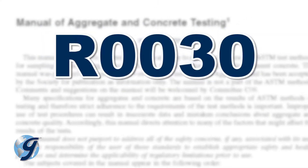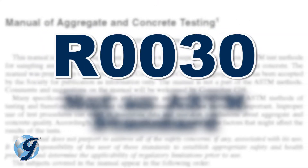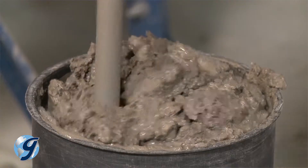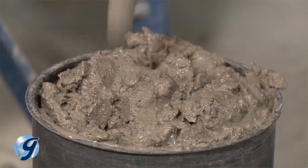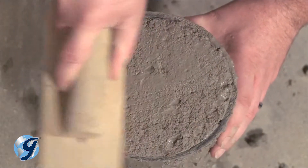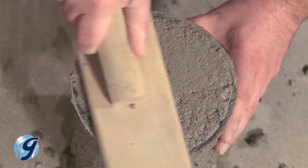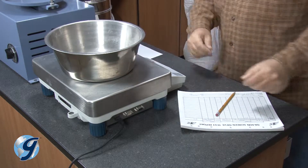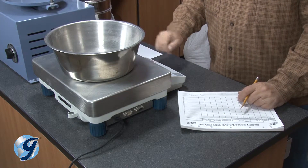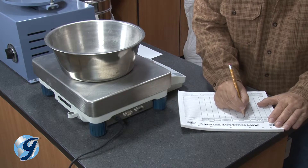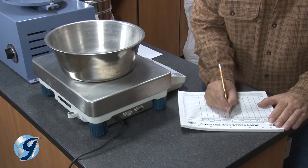The manual has a number designation R0030 and is not an ASTM standard, nor is it written in the mandatory language style used in standard practice and test method documents. It is written in simple language, shaped by practical experience by ASTM members with a wide and deep real-world background in concrete and aggregate testing.